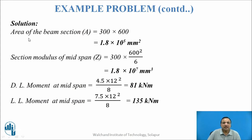Area of cross section = 300 × 600 = 1.8 × 10⁵ mm². Modulus of section = BD²/6 = 1.8 × 10⁷ mm³. Dead load moment = WL²/8 (simply supported) = 81 kN·m.